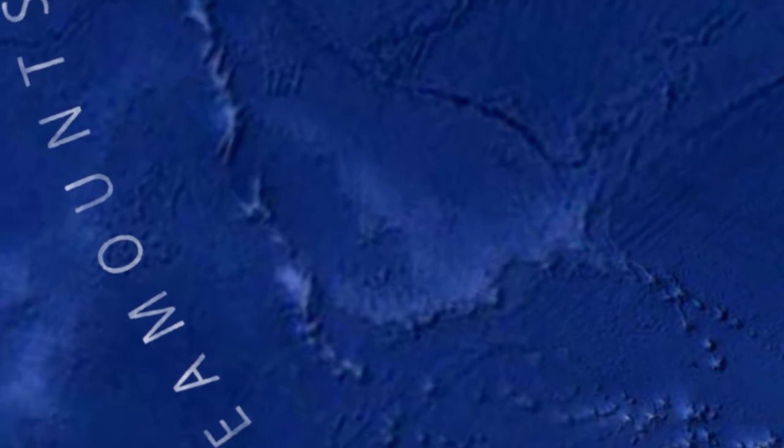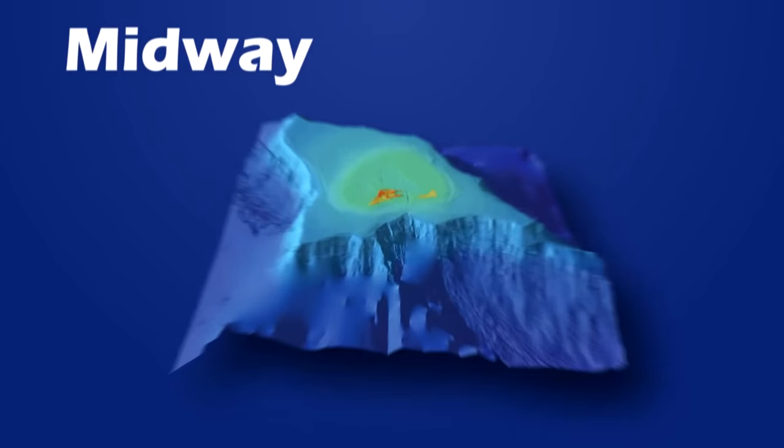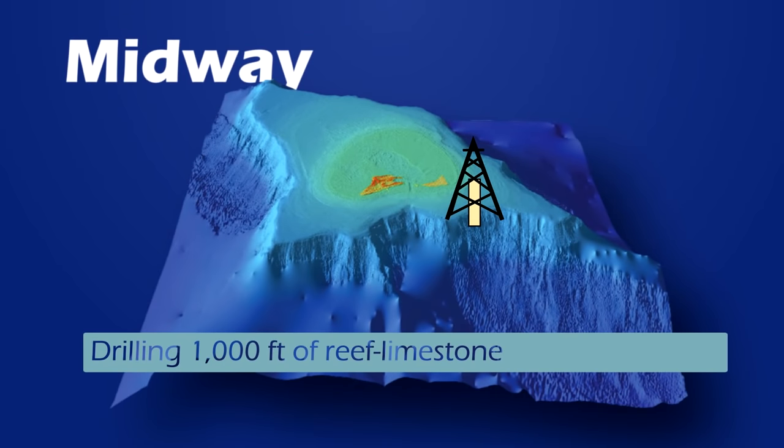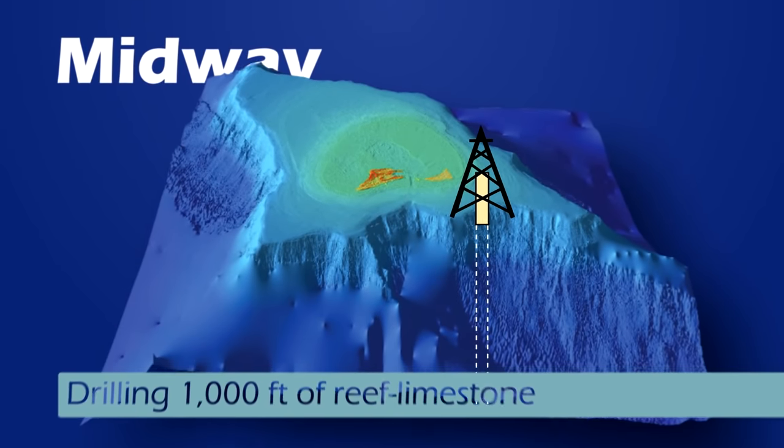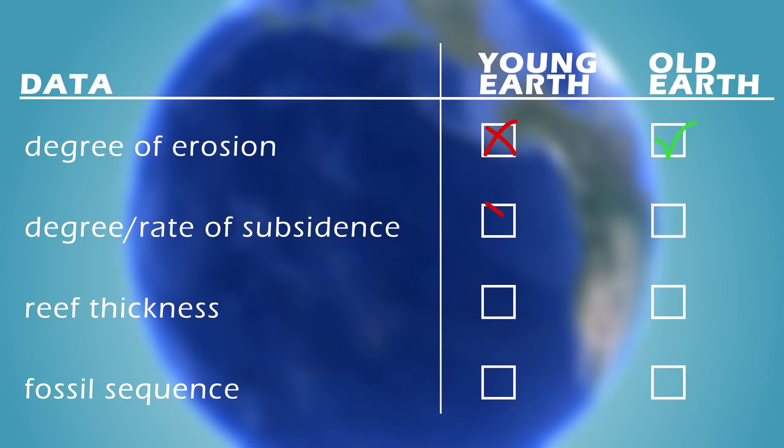Reef thickness also increases with age and subsidence as reefs add layers to keep within the photic zone. At Midway Island, researchers drilled through 1,000 feet of reef limestone before reaching volcanic rock. In addition to measuring thickness, fossil reef species were identified in core samples. The species change with depth, with many of those at the bottom found nowhere on Earth alive today. In each case, the evidence fits old Earth expectations.